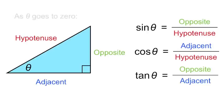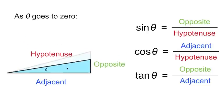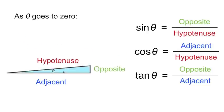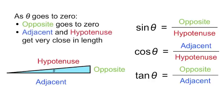Let's see what happens as theta gets smaller and smaller, approaching 0. Here's a triangle with a very small theta that's near 0 degrees. As theta approaches 0, the opposite side gets really short — it's approaching 0 as well. Meanwhile, adjacent and hypotenuse are getting very close in length.